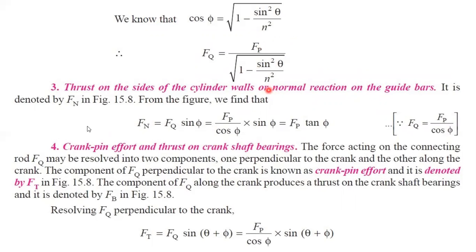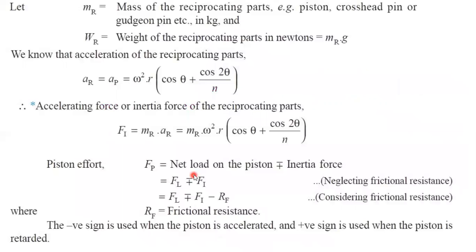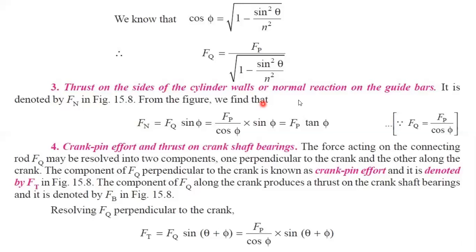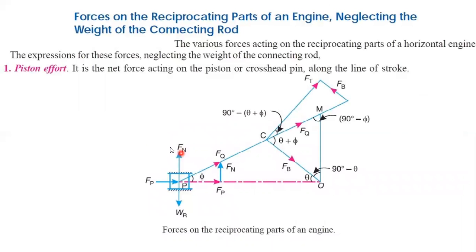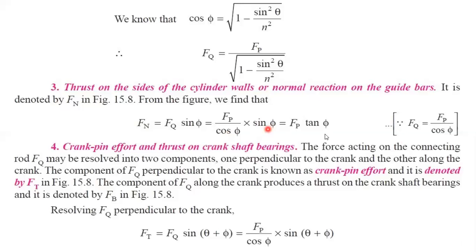The next force is the thrust acting on the sides of the cylinder wall or guide bars, denoted as Fn — the normal reaction on the guide bars. Fn = Fq × sin φ. Since Fq = Fp / cos φ, this becomes Fn = (Fp / cos φ) × sin φ. Since sin φ / cos φ = tan φ, finally Fn = Fp × tan φ.